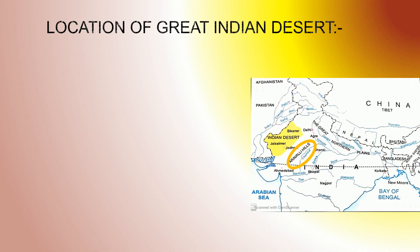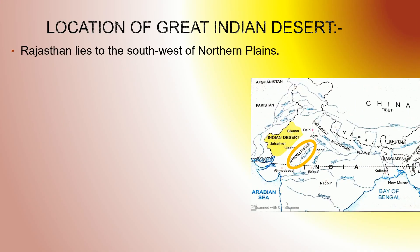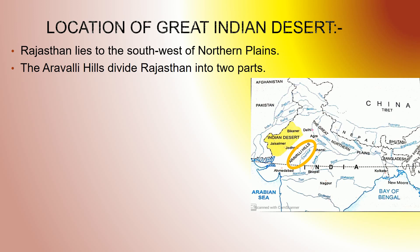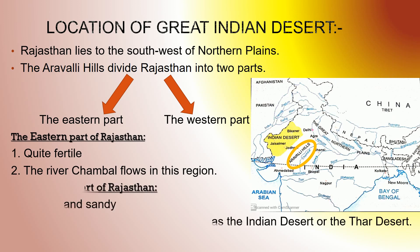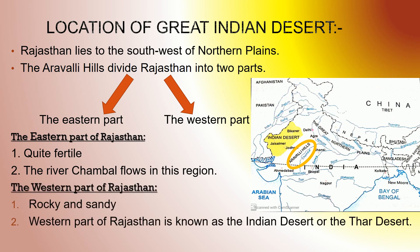Location of the Great Indian Desert: Rajasthan lies to the southwest of the Northern Plains. The Aravalli Hills divide Rajasthan into two parts — the Eastern part and the Western part. The Eastern part of Rajasthan is quite fertile, and the River Chambal flows in this region, as you can see on this map. The Western part of Rajasthan is rocky and sandy, and is known as the Indian Desert or the Thar Desert.